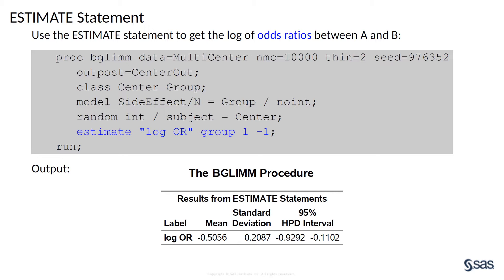The table shows that the posterior mean of the difference, which is the log odds ratio, is around negative 0.5, with the 95% HPD interval all negative. This indicates less chance of developing side effects among patients who undergo treatment A than among those who undergo treatment B.